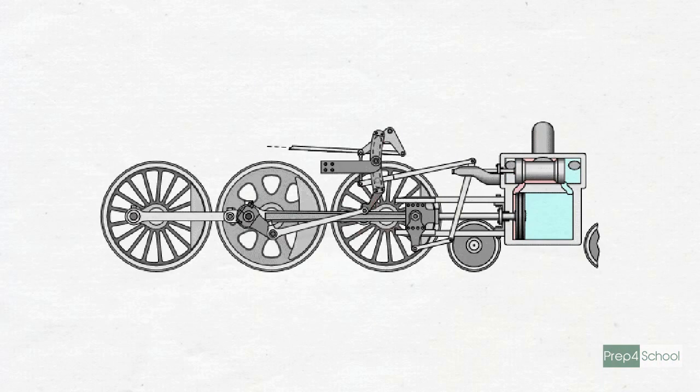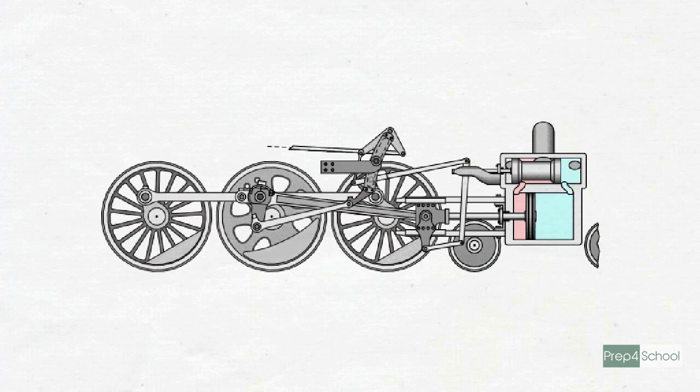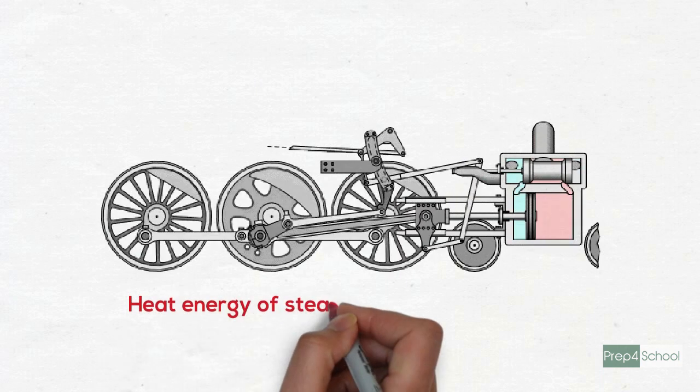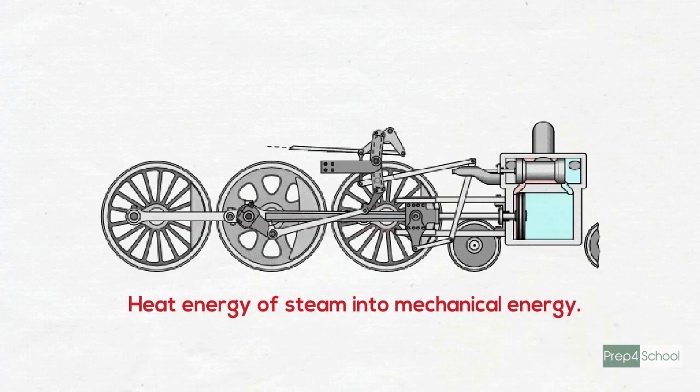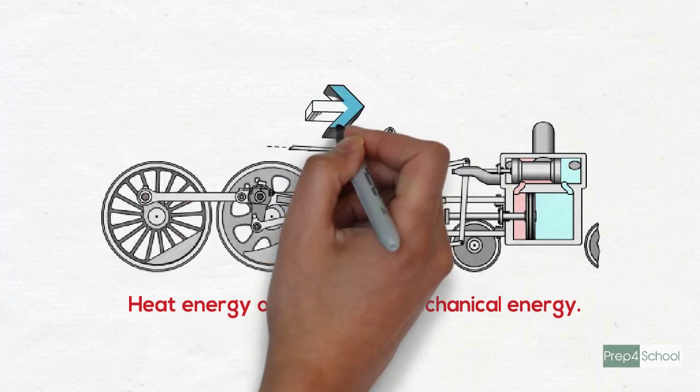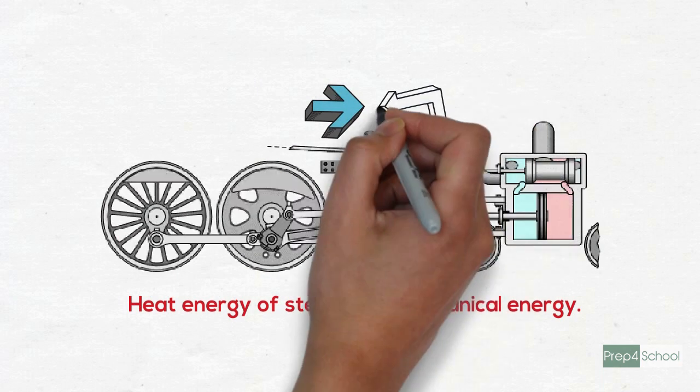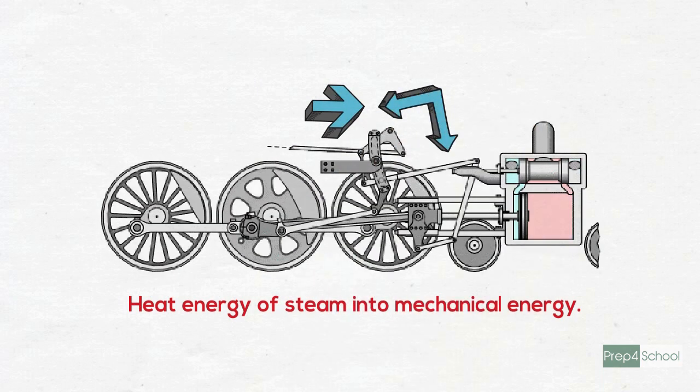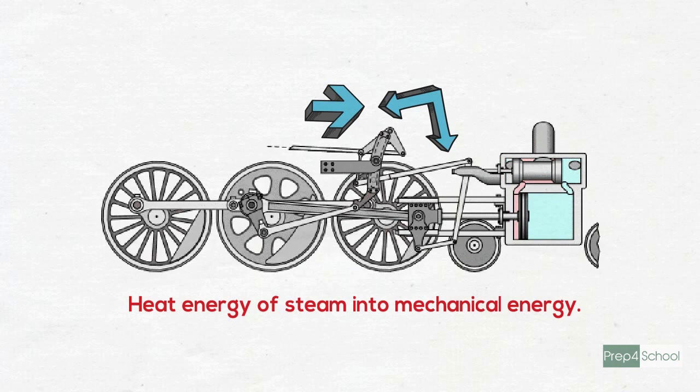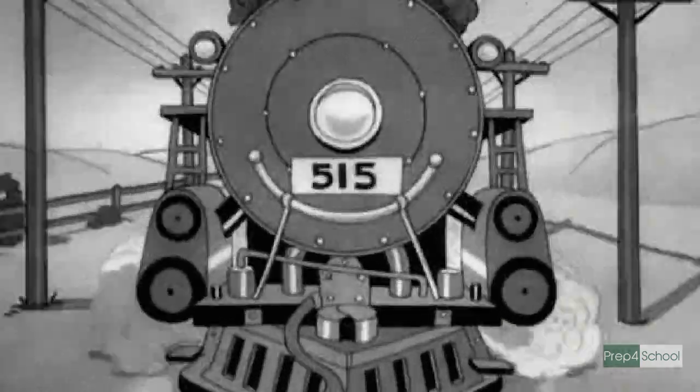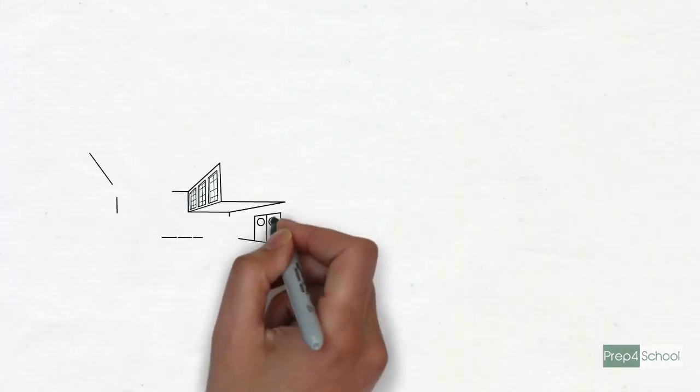A steam engine is a machine that converts the heat energy of steam into mechanical energy. A steam engine passes its steam into a cylinder where it then pushes a piston back and forth. It is with this piston movement that the engine can do mechanical work.